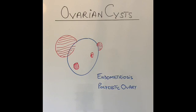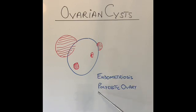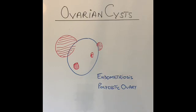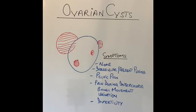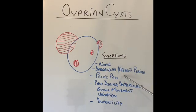Not every patient with ovarian cysts has an underlying medical problem. However, a small percentage have conditions that predispose them to developing ovarian cysts. One such condition is endometriosis, and another is polycystic ovary syndrome (PCOS), in which several small cysts can form in the ovary.